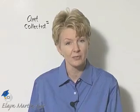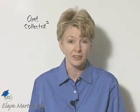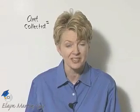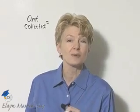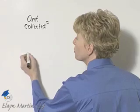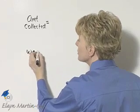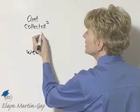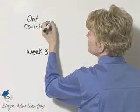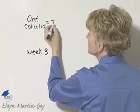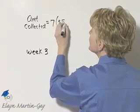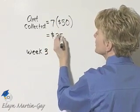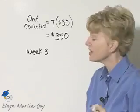We also want to know how much money was collected that week, so count the number of symbols in week three. There are seven symbols in week three. The most money was collected in week three — seven symbols, each one standing for $50, so the amount of money collected during that week was $350.